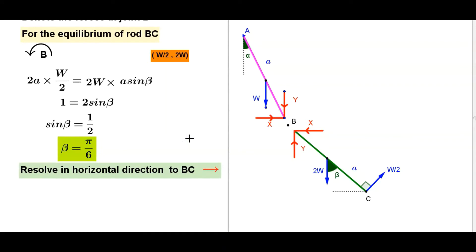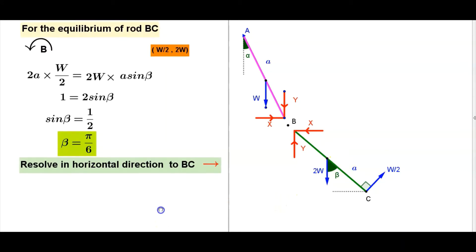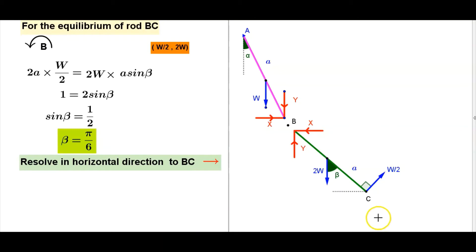Resolve in horizontal direction to BC. Considering the equilibrium of BC, now we do resolve the forces in the horizontal direction. This angle also beta, this one beta, this one 90 minus beta, this one 90 degrees. Therefore this angle is beta.